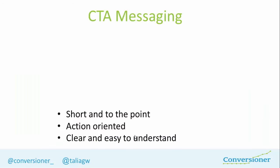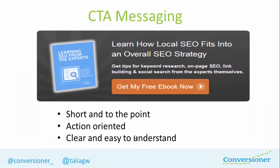We're also going to talk about the messaging — what do you write on your actual call to action button? It needs to be short and to the point, action oriented, and clear and easy to understand. It should usually be two to three words and needs to be to the point. Unbounce has been using their call to action to say 'get my free e-book now' — it's action oriented because it's telling you to get something, it's short and to the point, and it's very easy to understand that when you click on it, you're going to get an e-book.